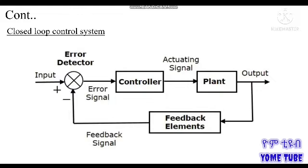This is the feedback circuit. This is the output of the control loop. This is the input of the control loop. This is how we check the controller loop. This is the block diagram.